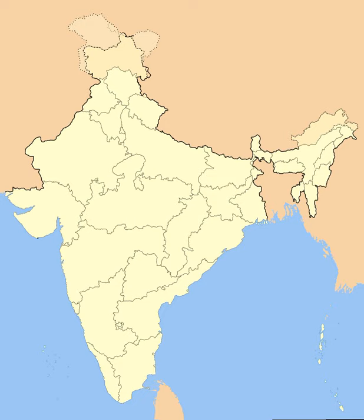In November 2000, three new states were created: Chhattisgarh from eastern Madhya Pradesh, Uttaranchal from northwest Uttar Pradesh (renamed Uttarakhand in 2007), and Jharkhand from southern districts of Bihar. Orissa was renamed as Odisha in 2011. Telangana was created on 2 June 2014 as ten former districts of northwestern Andhra Pradesh.